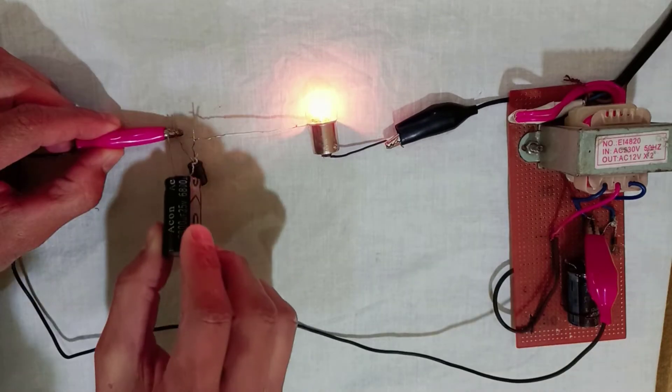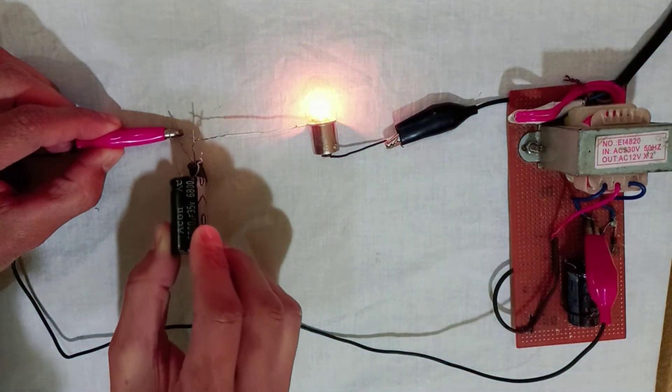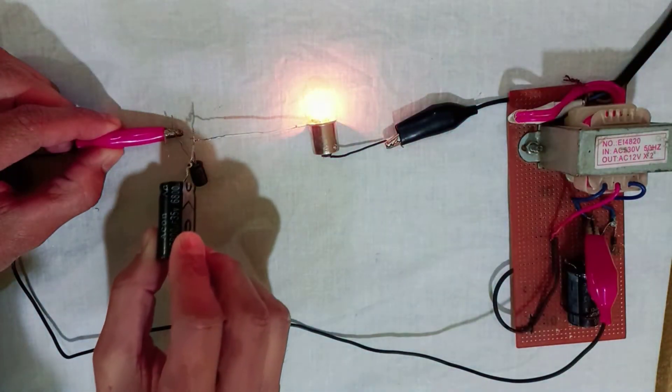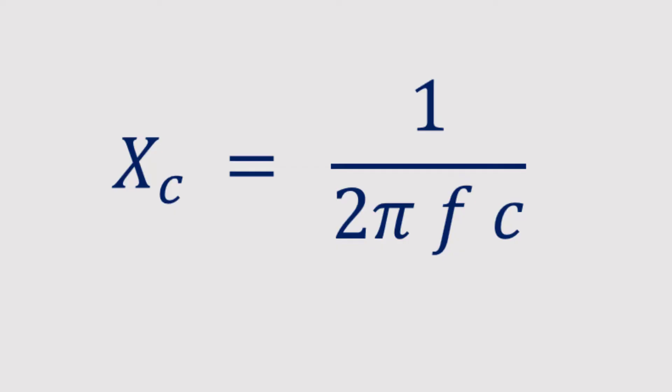Capacitive reactance is the opposition offered by a capacitor to the flow of AC current. It is different in nature from the resistance of a resistor. Capacitive reactance is represented by Xc and is inversely related to the frequency of AC current and the capacitance of the capacitor.